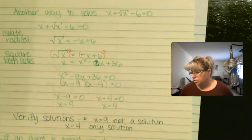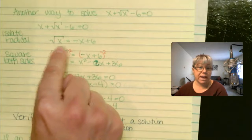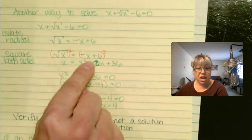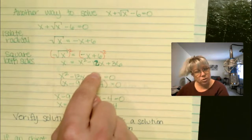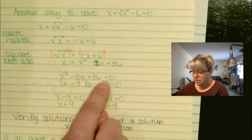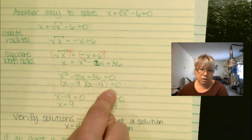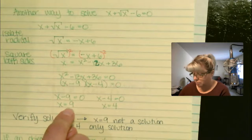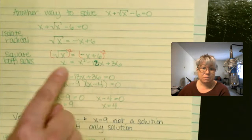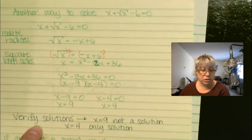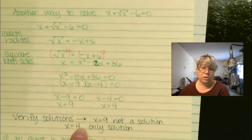The other way to solve this problem would be to isolate the radical. Let's move the x and the negative 6 over to the other side, giving square root of x equals negative x plus 6. Now I'm going to square both sides, giving x equals x squared minus 12x plus 36. Moving everything to one side: x squared minus 13x plus 36 equals 0. We factor to get x minus 9 times x minus 4 equals 0, giving x equals 9 and x equals 4. Again, because I squared both sides, I have to verify both solutions — and as before, x equals 9 was not a solution, and x equals 4 was our only solution.